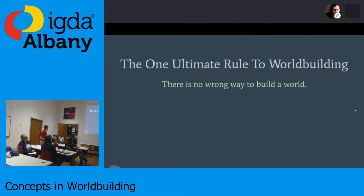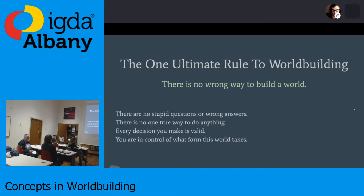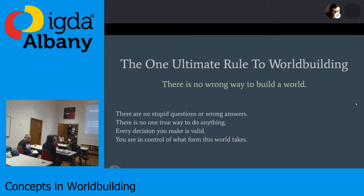I have found there to be really one rule with all this: there's no wrong way to do world building. There are no stupid questions or wrong answers. There's no one true valid way to do anything. Every decision that you make about your world is valid, and every path and every thread that you want to pursue can lead to a better, stronger world. You are totally in control of everything that you do with it.